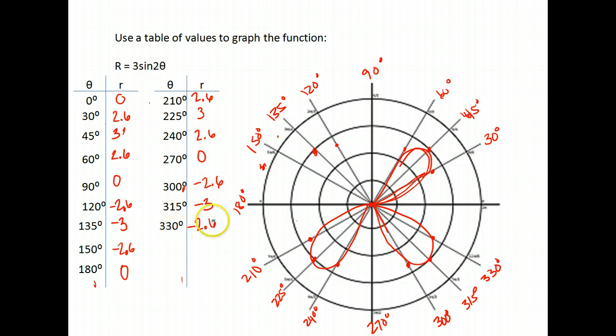So then 330, and we open up all the way. Here's our 330 degree angle, and we go negative 2.6. So negative 1, 2.6. And then if we got 360, we would actually come back to 0 again. So we get another petal here.